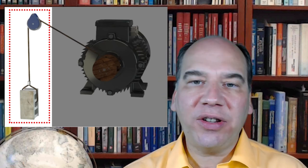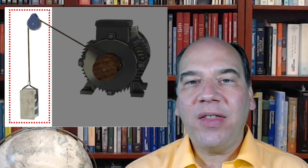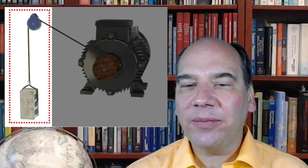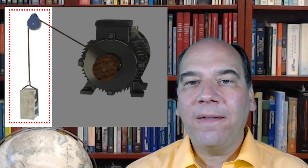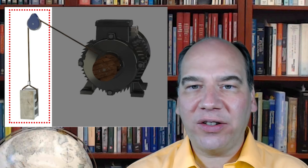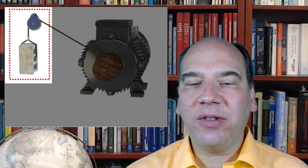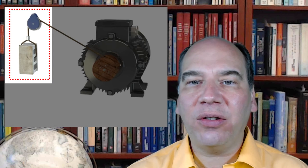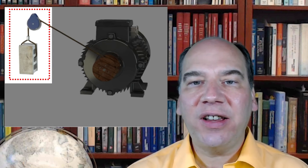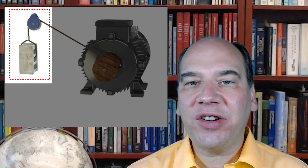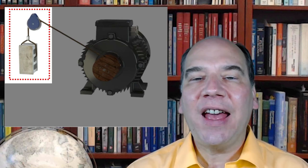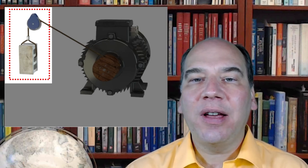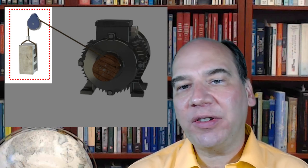The initial state: block is at the bottom, zero kinetic energy, zero gravitational potential energy, initial internal energy given by temperature. If there is no friction on the pulley — a perfect frictionless pulley — then nothing from our earlier system description changes. At the final state, the pulley didn't change height, didn't change kinetic energy, no friction so no temperature change.